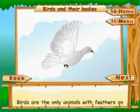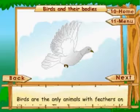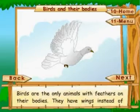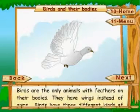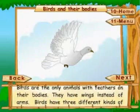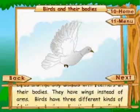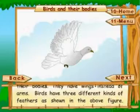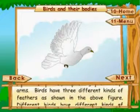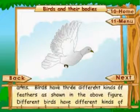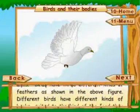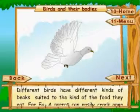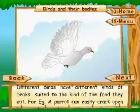Birds are the only animals with feathers on their bodies. They have wings instead of arms. Birds have three different kinds of feathers, as shown in the figure. Different birds have different kinds of beaks suited to the kind of food they eat.